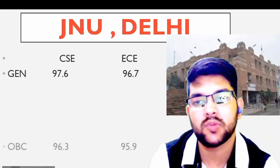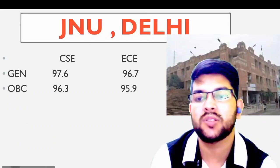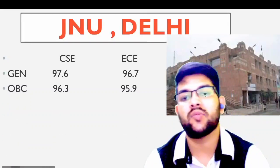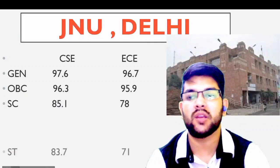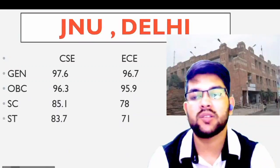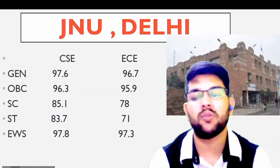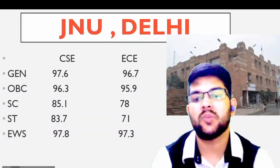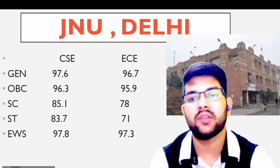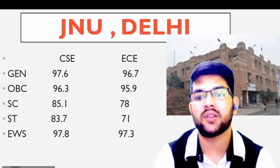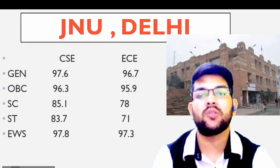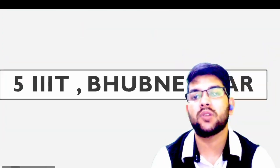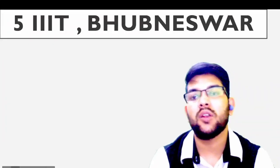Next is JNU Delhi. Here is the information. For general: 97.6 and 96.7. For OBC: 96.3 and 95.9. For SC: 85 and 78. For ST: 83 and 71. For EWS: 97, and for EC: 97.8 and 97.3.